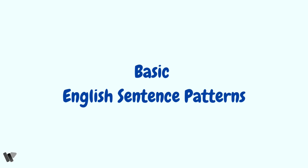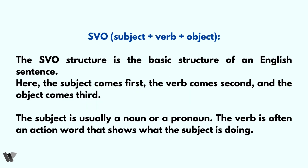Hello everyone. In this video you are going to learn the basic English sentence patterns or structures. The basic sentence structure in English is subject, verb, then object, which is sometimes represented as SVO. This structure helps readers understand who is performing the action and the outcome of the action.